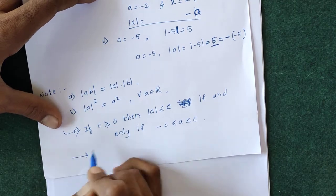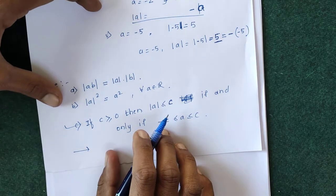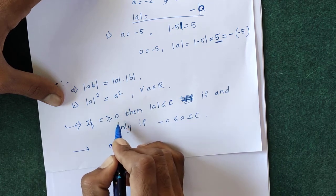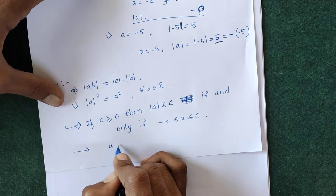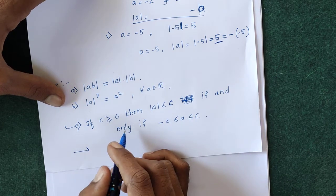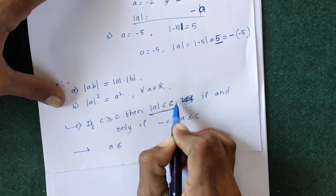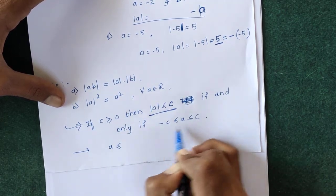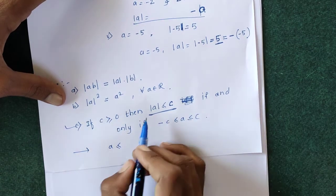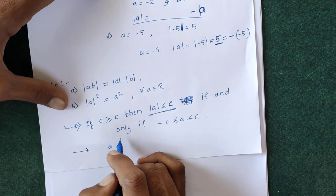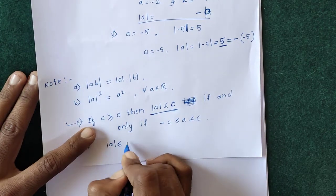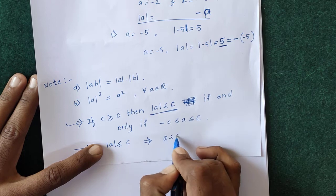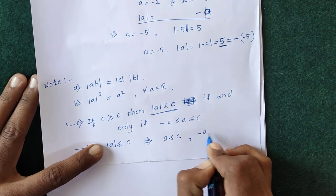To prove property 3 — the forward direction: suppose mod a ≤ c. If a is a positive number, then mod a equals a, so a ≤ c. If a is a negative number, then mod a equals −a, so −a ≤ c. For example, mod(−5) ≤ 7 gives 5 ≤ 7, and also −5 ≤ 7. So mod a ≤ c gives us both a ≤ c and −a ≤ c.